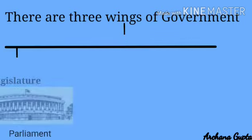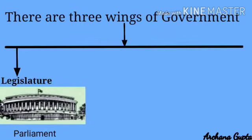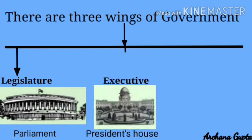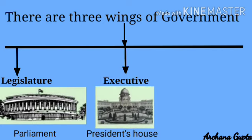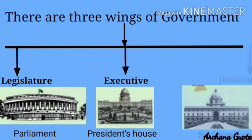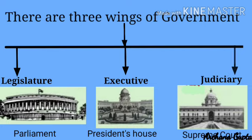The first wing is the lawmaking wing, which is called the legislature. The second is the governing wing, called the executive. And the third wing that dispenses justice is called the judiciary.